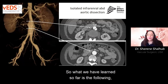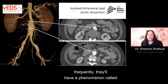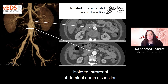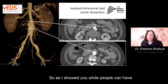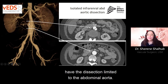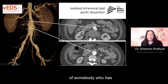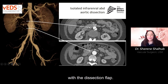What we have learned so far is the following: patients with vascular EDS who present with aortic pathology frequently have a phenomenon called isolated infrarenal abdominal aortic dissection. While people can have type A or type B dissections, in vascular EDS the dissection is more commonly limited to the abdominal aorta. This is a three-dimensional reconstruction of someone who has an aneurysm in the infrarenal abdominal aorta with a dissection flap.